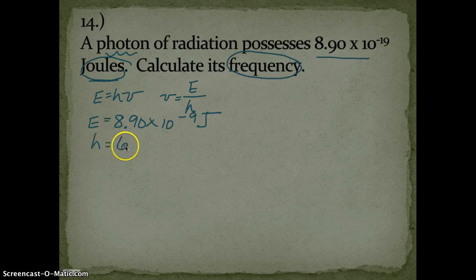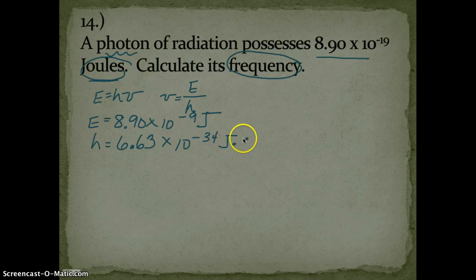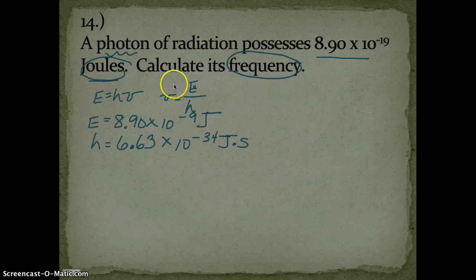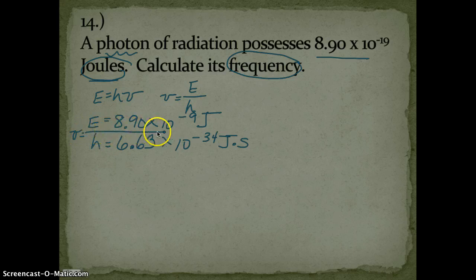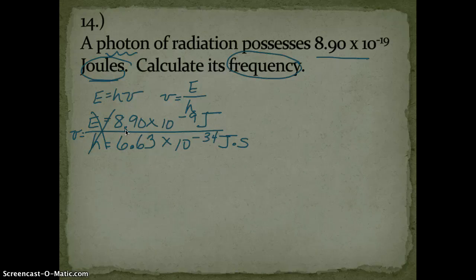Energy equals 8.90 times 10 to the negative 9th joules, and we need to know one more thing, and that would be h. You can use 6.63 or 6.626—it doesn't matter—times 10 to the negative 34th, and that's joule-seconds. Essentially, just to save a little bit of time in this podcast, I've laid this out so it's going to be set up just like the equation.